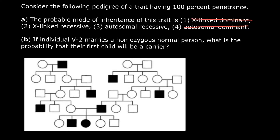Now we are left only with autosomal recessive and X-linked recessive. Why is it not autosomal recessive? Because you see the pattern that only males are affected with this genetic disorder — we only see one female affected. So preferentially we see it in males, which gives a strong suggestion that this is X-linked recessive, especially when the disorder skips a generation and the affected son gets it through his mother, not from his father.